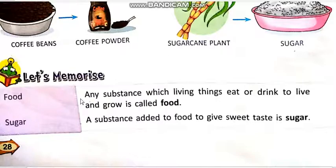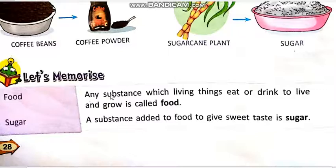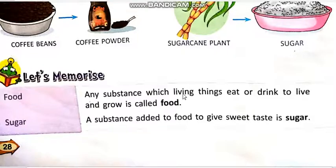Food: any substance which living things eat or drink to live and grow is called food. Any substance — جو بھی کوئی substance ہم grow — بڑے ہونے کے لئے and live — زندہ رہنے کے لئے — پیتے ہیں and کھاتے ہیں. ہم جو بھی زندہ رہنے یا بڑے ہونے کے لئے کھاتے اور پیتے ہیں، that substance is called food.